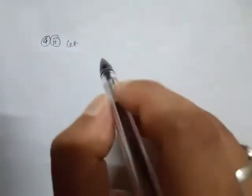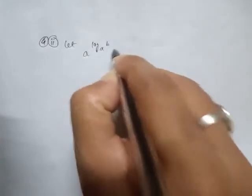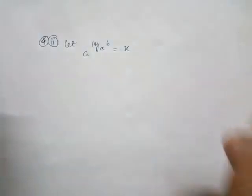Student, now look that 4 roman 2 of Exercise 3.1. Here I'm writing that a log base x b equal to k, equation number one. I've taken here k and I'm taking this ratio as equation number one.